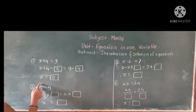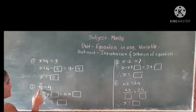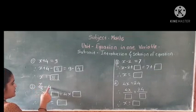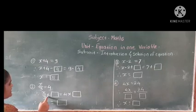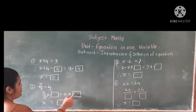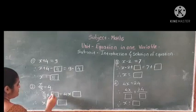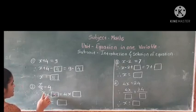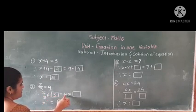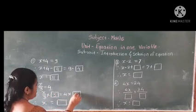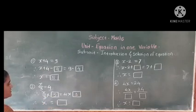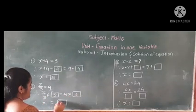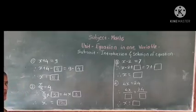Next example: x divided by 3 is equal to 4. We multiply 3 by both sides. x divided by 3, times 3, and 4 times 3. The 3 gets cancelled and 4 times 3 is 12. So the value of x is 12.